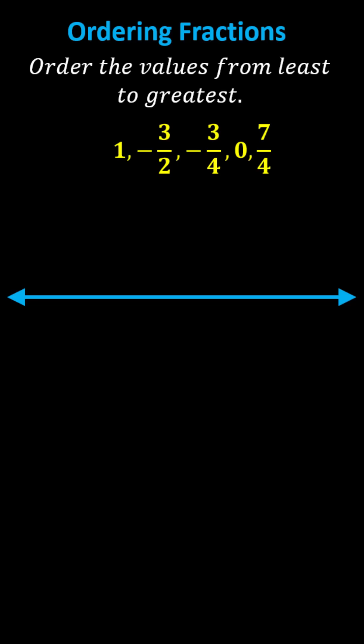Order the values from least to greatest. To do this, we'll plot the values on the number line. However, let's first convert the improper fractions to mixed numbers. Notice negative 3 halves and 7 fourths are improper fractions.